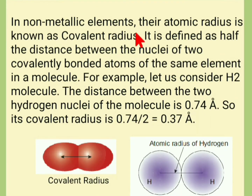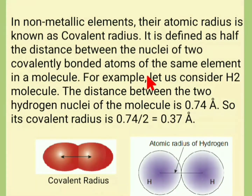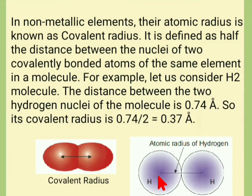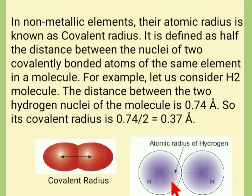In non-metallic elements such as hydrogen, nitrogen, and oxygen, the atomic radius is called the covalent radius. It is defined as half the distance between the nuclei of two covalently bonded atoms of the same element in a molecule. For example, in the hydrogen molecule H–H, the distance between the two hydrogen nuclei is 0.74 angstrom. So the covalent radius is 0.74 divided by 2, which equals 0.37 angstrom.